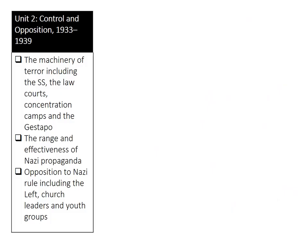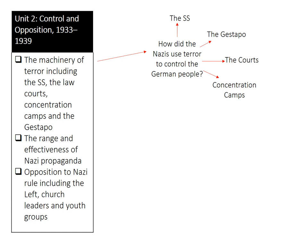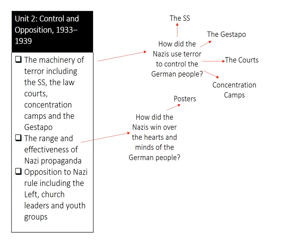In this unit we've looked at three different things. We started off looking at the machinery of terror and how the Nazis used terror to control the German people. We looked at the SS, the Gestapo, the courts and concentration camps — and I hope you're noting I'm not including everything, because you're never ever going to be able to remember everything, so I've tried to only include the most important things. In the second video we looked at how the Nazis tried to win over the hearts and minds of the German people through propaganda. We looked at posters, newspapers, radio and rallies.